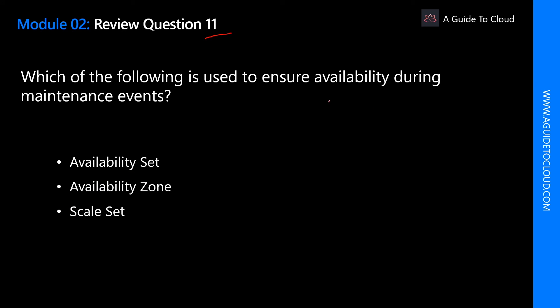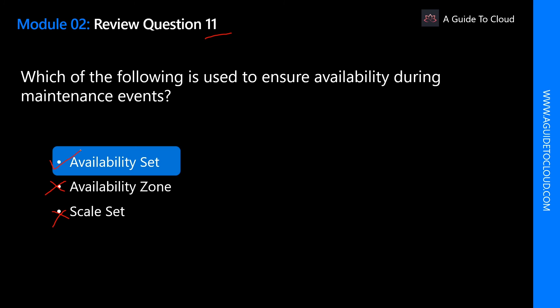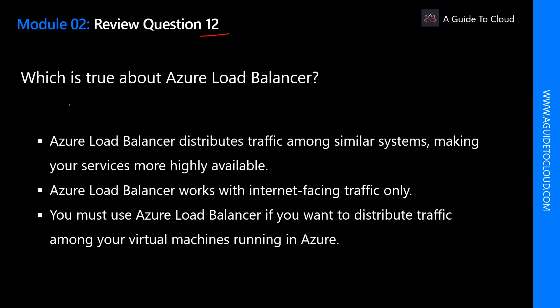Which of the following is used to ensure availability during maintenance events? Is it scale set? No — scale set is used to scale up and scale down the number of VM instances. Is it availability zone? No — availability zone gives high availability during a data center failure. The correct answer is availability set, because availability set provides VM redundancy and availability, ensuring that during a planned or unplanned maintenance event, at least one virtual machine is available and meets the 99.95% Azure SLA.